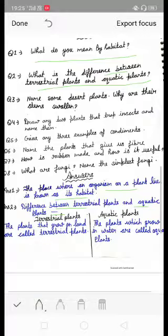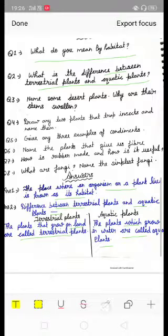The plants that grow on land are called terrestrial plants. Plants which grow in water are called aquatic plants.